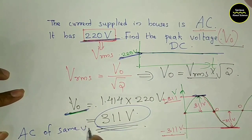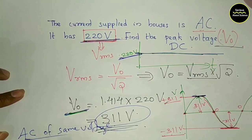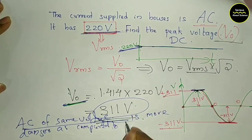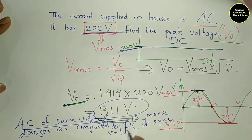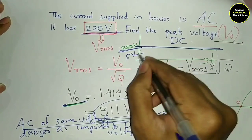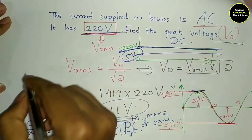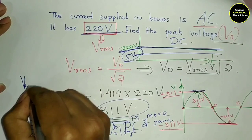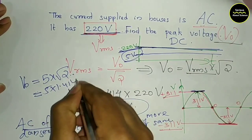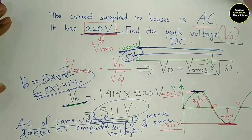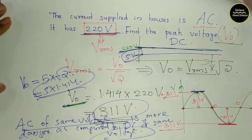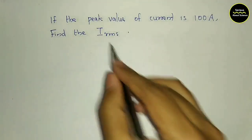AC of same voltage is more dangerous as compared to DC of same voltage. For example, DC of 5V is steady at 5V. But AC of 5V RMS has a peak value of 5 into root 2, which is 5 into 1.414 — it is higher. AC of same voltage is more dangerous as compared to DC of same voltage.